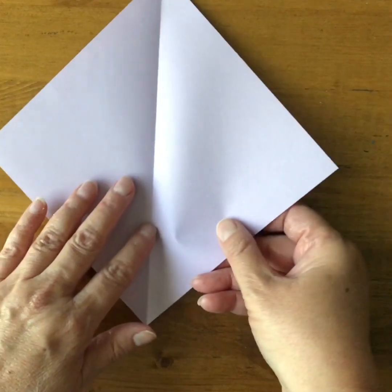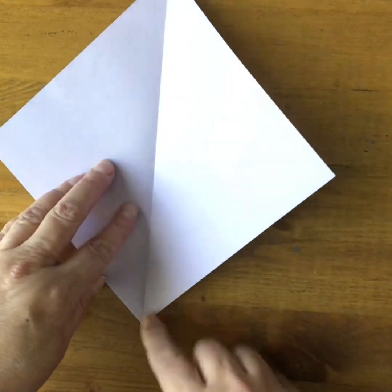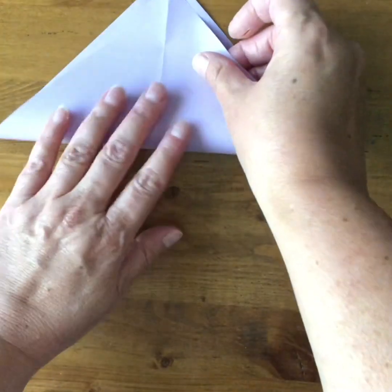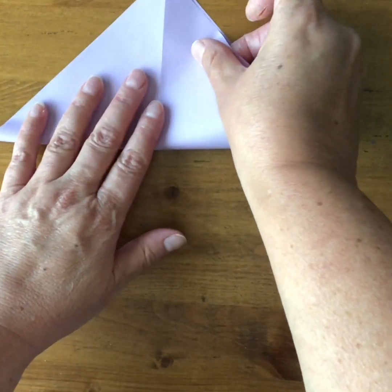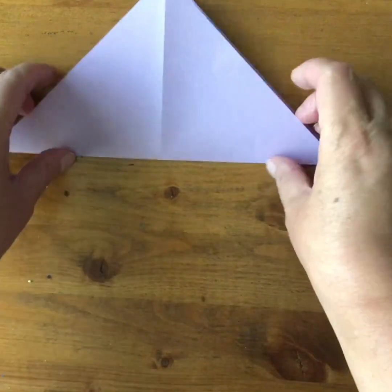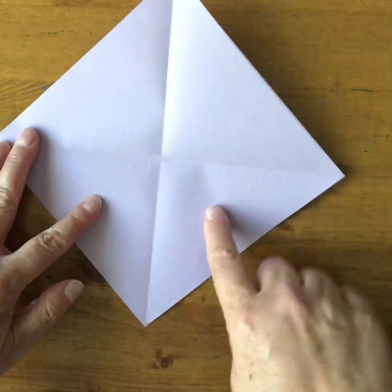We're going to turn it so that the fold line is going up and down. Now we're going to do the same thing again from the bottom point to the top point and create another diagonal line across here. So now when we open it up, we have four triangles.